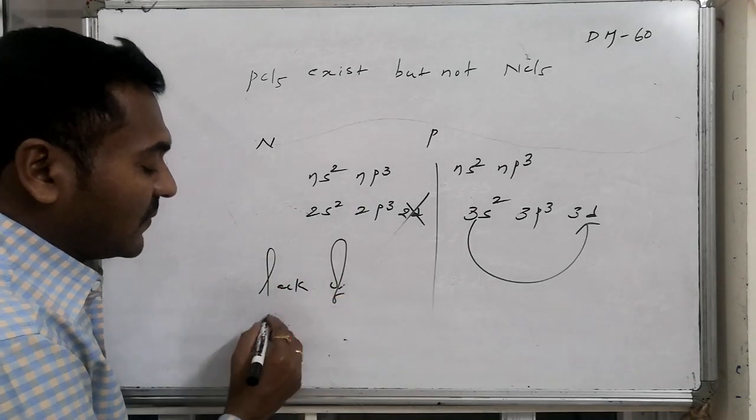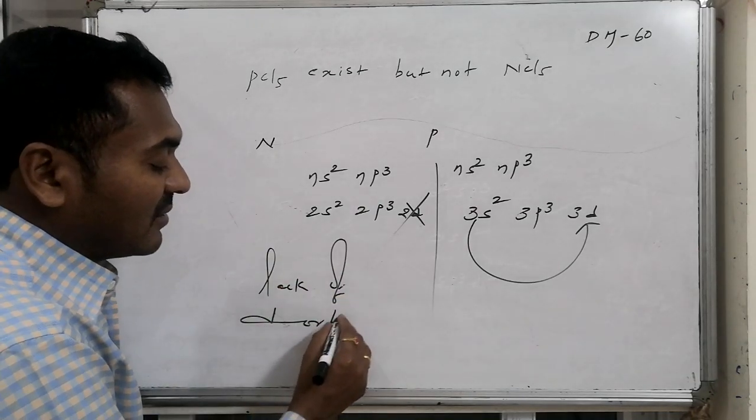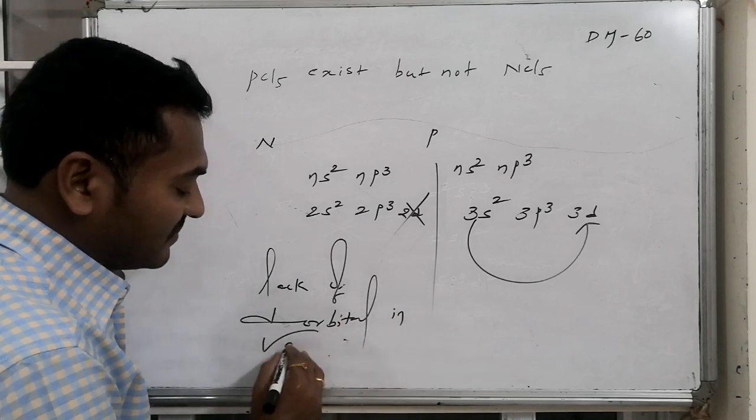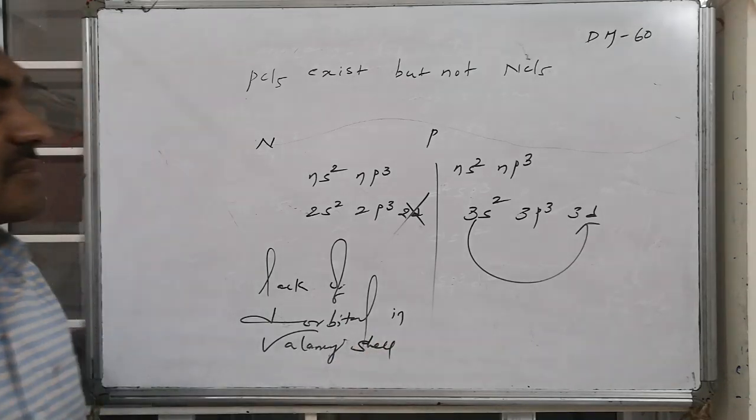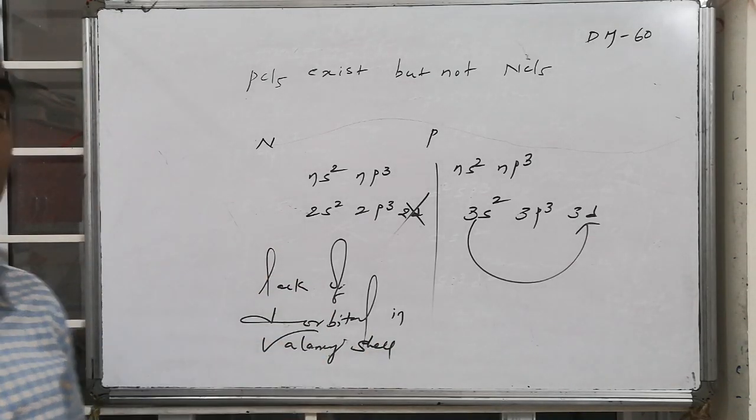Because of lack of d orbitals in the valency shell, there is no d orbital. Hence, d orbital electron promotion is not possible.